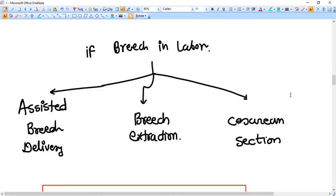Okay now if the breech presentation you identify at the time of labor, in active labor, what can you do? You have three options. First one is assisted breech delivery that means vaginal delivery. Second one is breech extraction. And the third one is caesarean section. Let me guess one thing.